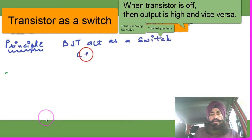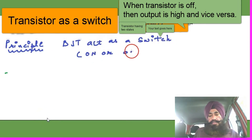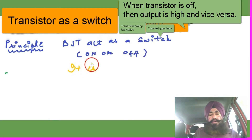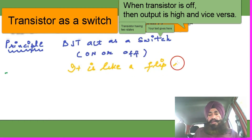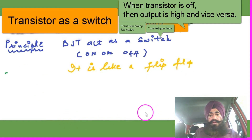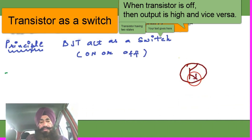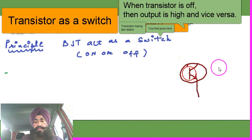Today I'll discuss how the bipolar junction transistor acts as a switch — it is on or off, like a toggling switch, like a flip-flop having zero and one memory states. Now let's learn how the transistor acts as a switch.